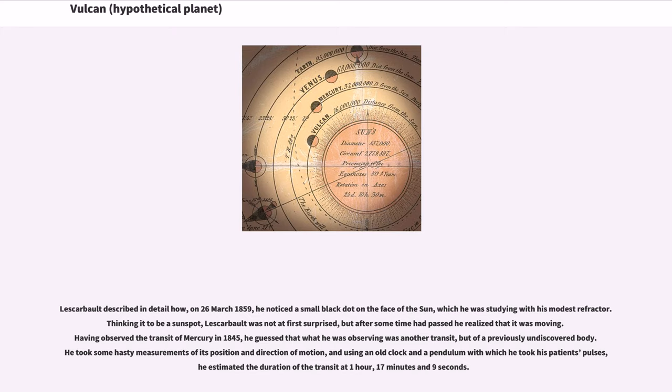Having observed the transit of Mercury in 1845, he guessed that what he was observing was another transit, but of a previously undiscovered body. He took some hasty measurements of its position and direction of motion, and using an old clock and a pendulum with which he took his patient's pulses, he estimated the duration of the transit at one hour, seventeen minutes and nine seconds.